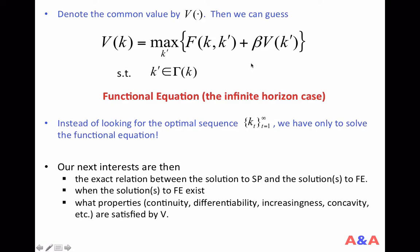It turns out that obtaining the V function, the solution to this functional equation, is not very difficult. Because the mapping defined by the right-hand side of this functional equation turns out to be a contraction mapping, which means that you can simply pick out some simple function—a constant function, a linear function—and do some iteration, and it will converge to the solution function. But that's, I guess, beyond the scope of this class.